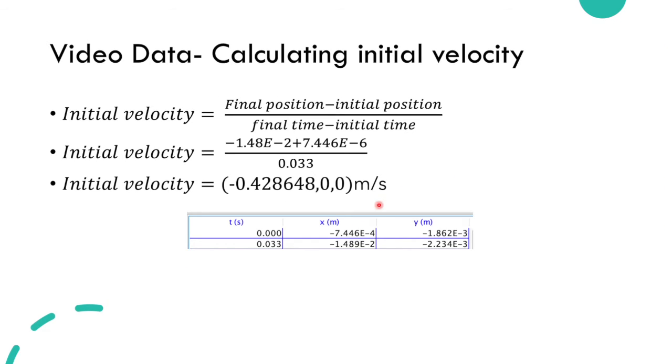To calculate the velocity, we simply used the two data sets from tracker from our first frame at time zero and our second frame at time 0.33, and this gave us an initial velocity of minus 0.4286 meters per second.